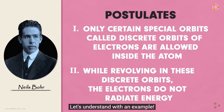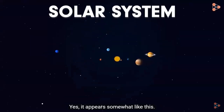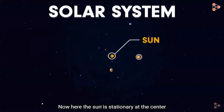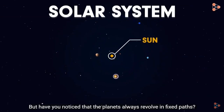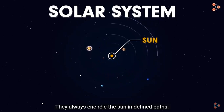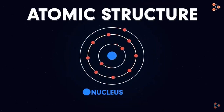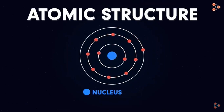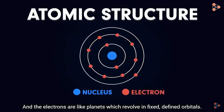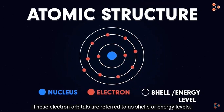Let's understand with an example. You know how our solar system is — the Sun is stationary at the center while the planets revolve around it in fixed paths. We never find any planet jumping to a different path all of a sudden; they always encircle the Sun in defined paths. In a similar way, we have the atomic structure — the nucleus acts like the Sun located at the center, and the electrons are like planets which revolve in fixed, defined orbitals. These electron orbitals are referred to as shells or energy levels.